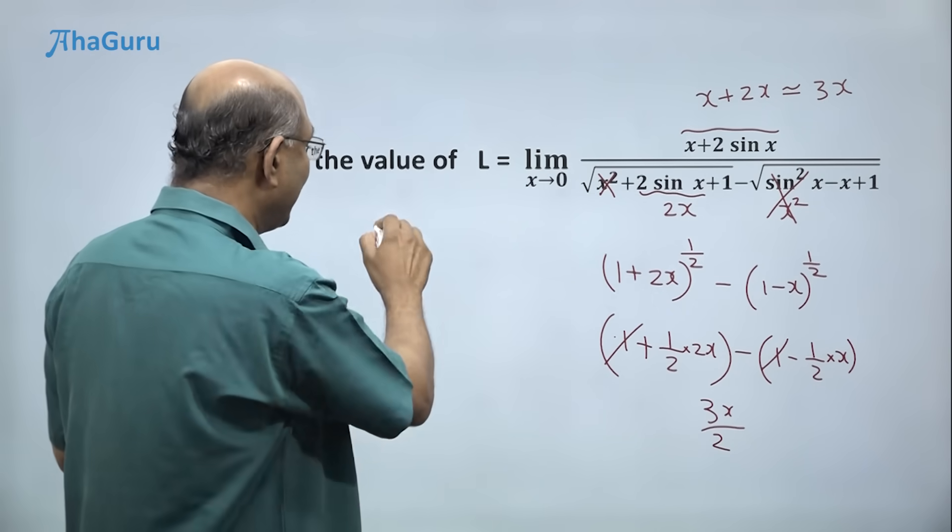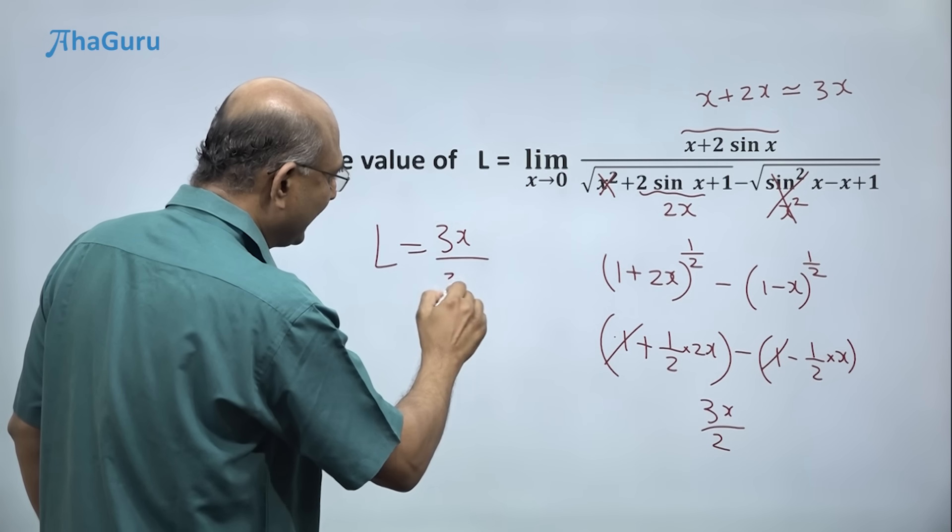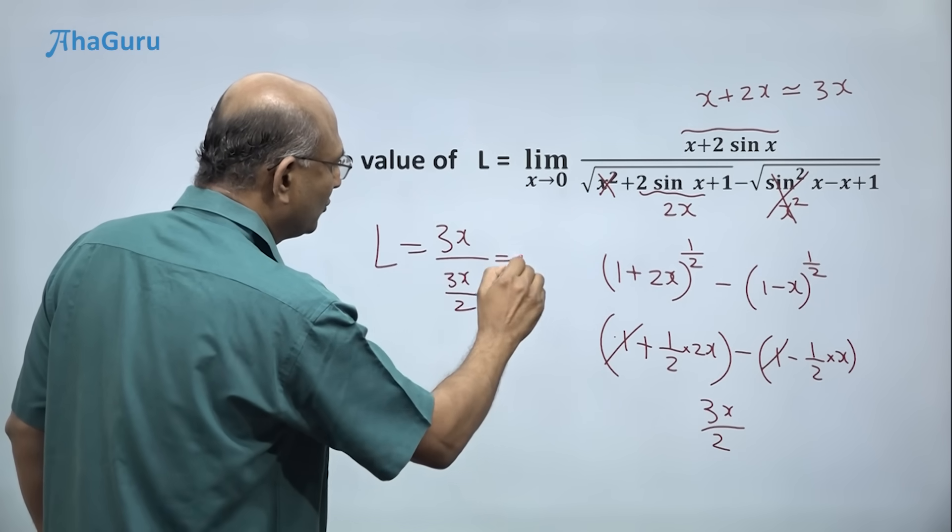Numerator is 3x. So what is the limit? Limit is 3x by 3x by 2, which is equal to 2.